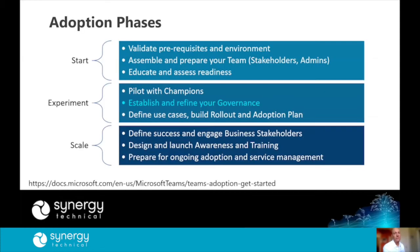Microsoft recommends a three-phase approach to adopting Teams. In the Start phase, you assess your environment, assemble stakeholders and administrators, and go through education and readiness. In the Experiment phase, you begin establishing and refining your governance while piloting Teams — defining use cases and building your rollout and adoption plan. You want to do this governance work before moving to the Scale phase, where you do your actual rollout, training, and drive adoption. The things we're talking about today are decisions you want to make during that Experiment phase.